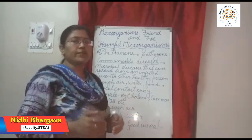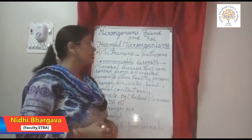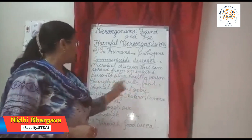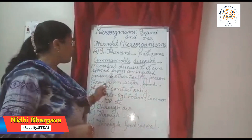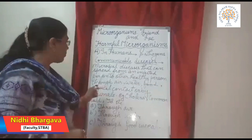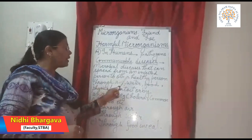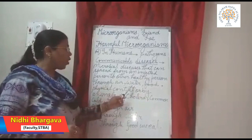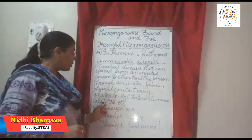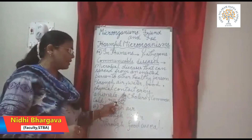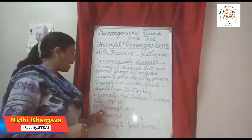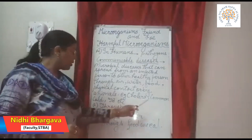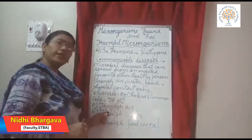We can define communicable diseases as microbial diseases that can spread from an infected person to other healthy persons through air, water, food, physical contact, or by animals. For example, cholera, common cold, TB, etc.